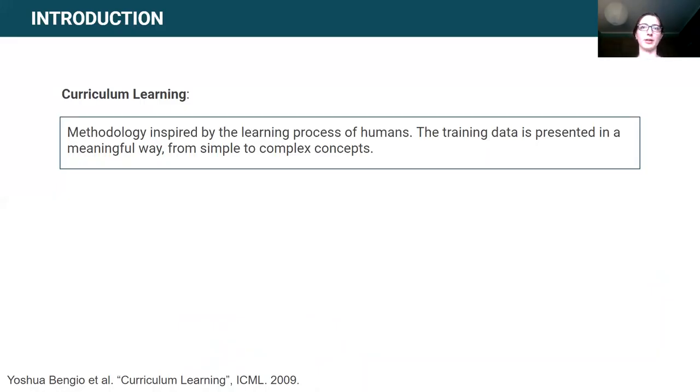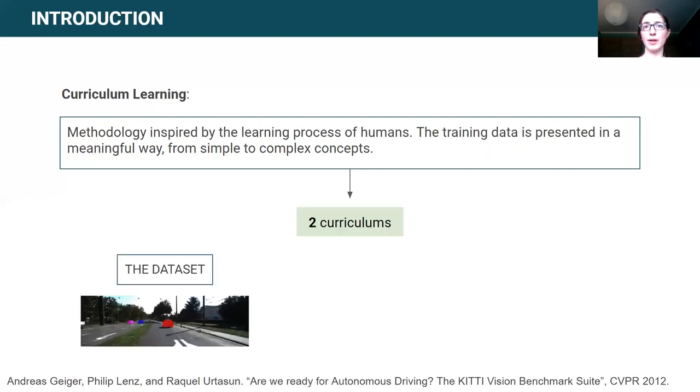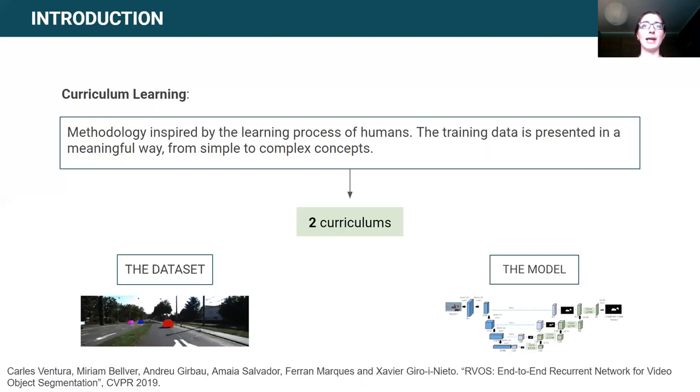Our work studies the impact of Curriculum Learning, which consists of starting training your model with simple examples and increasing the complexity through time. We have studied two strategies applied to the dataset for autonomous driving KITTI MOTS, using the RGOS model, able to process more than 20 frames per second, which provides a fast solution for this challenge.